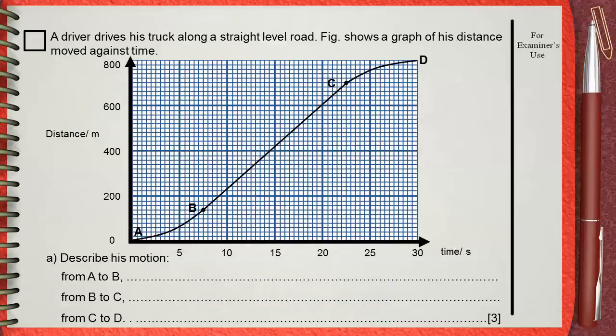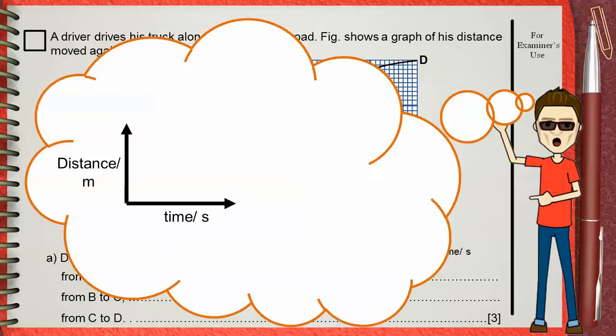Remember that in this lesson we have two types of graphs. The first one is distance time and the second one is speed time. Before you answer any question you must first decide whether your graph is a distance time or a speed time.